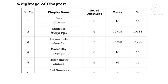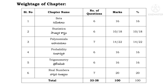Now let us see the syllabus distribution. From Sets, 6 questions come and 16 marks are allotted. From Statistics, 6 questions come and 10 to 18 marks are allotted. From Progressions, 7 questions come and 14 to 22 marks are allotted. From Probability, 6 questions come and 16 marks are allotted. From Trigonometry, 6 questions come and 16 marks are allotted. From Real Numbers, 7 questions come and 20 marks are allotted. Total: 33 questions, 100 marks.